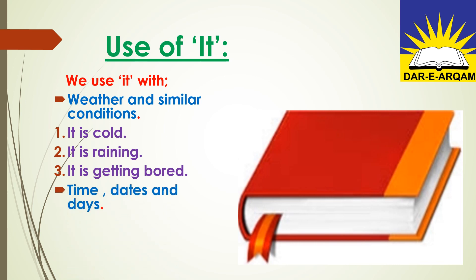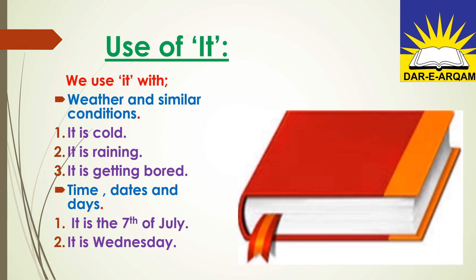The second point: we use 'it' with time, dates, and days. For example: It is the 7th of July — here is a date, so we use 'it.' It is Wednesday — that is a day, so we use 'it.' It is 10 a.m. — that is a time, so we use 'it.' So the first use was weather and similar conditions, and the second use is with time, dates, and days.